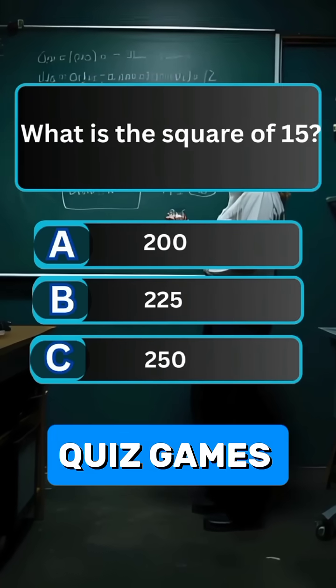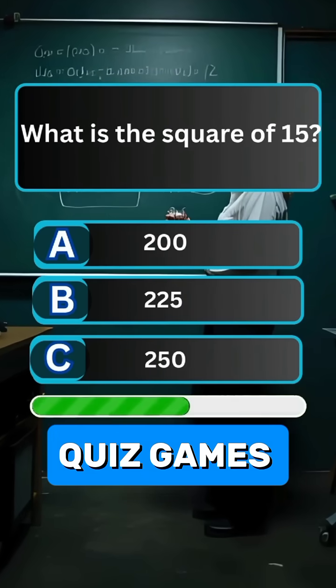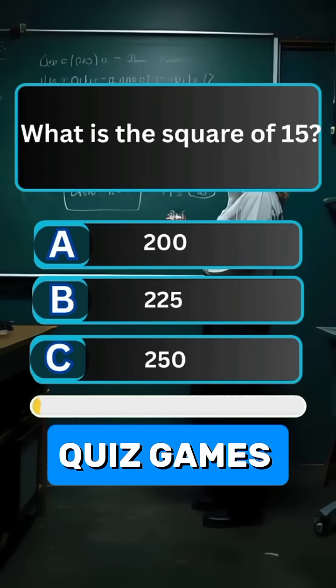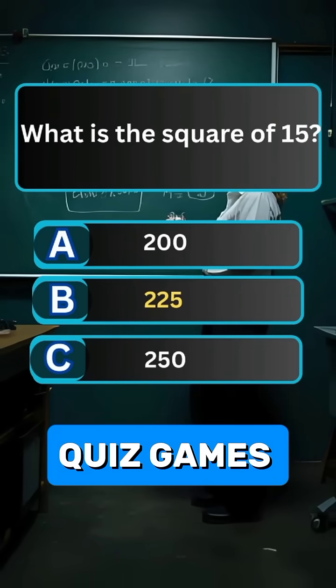Question 3. What is the square of 15? Answer B. 225.